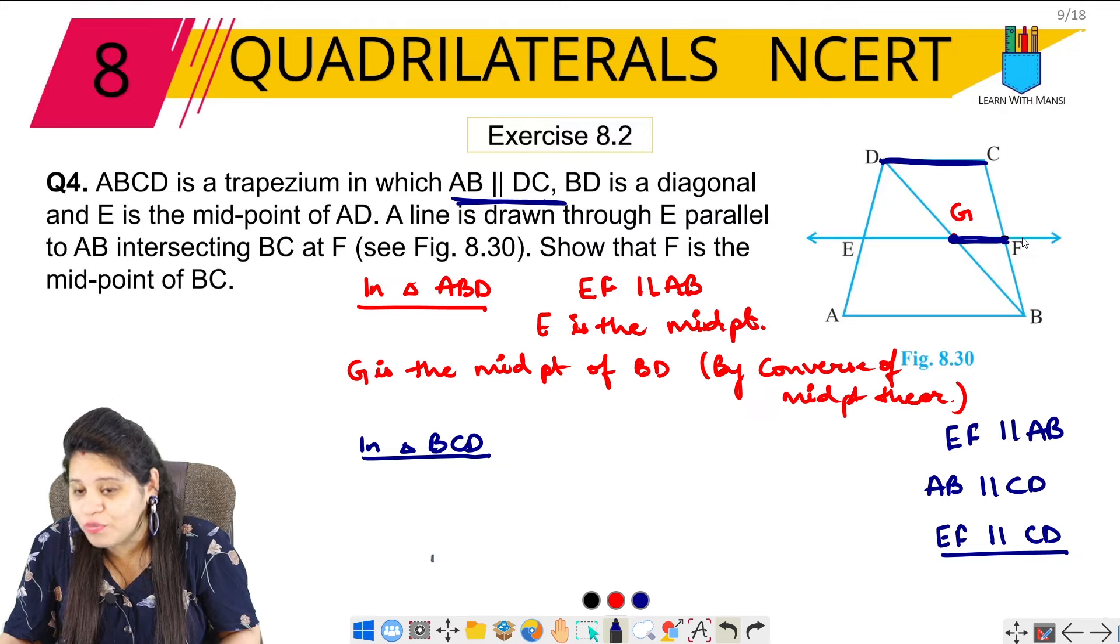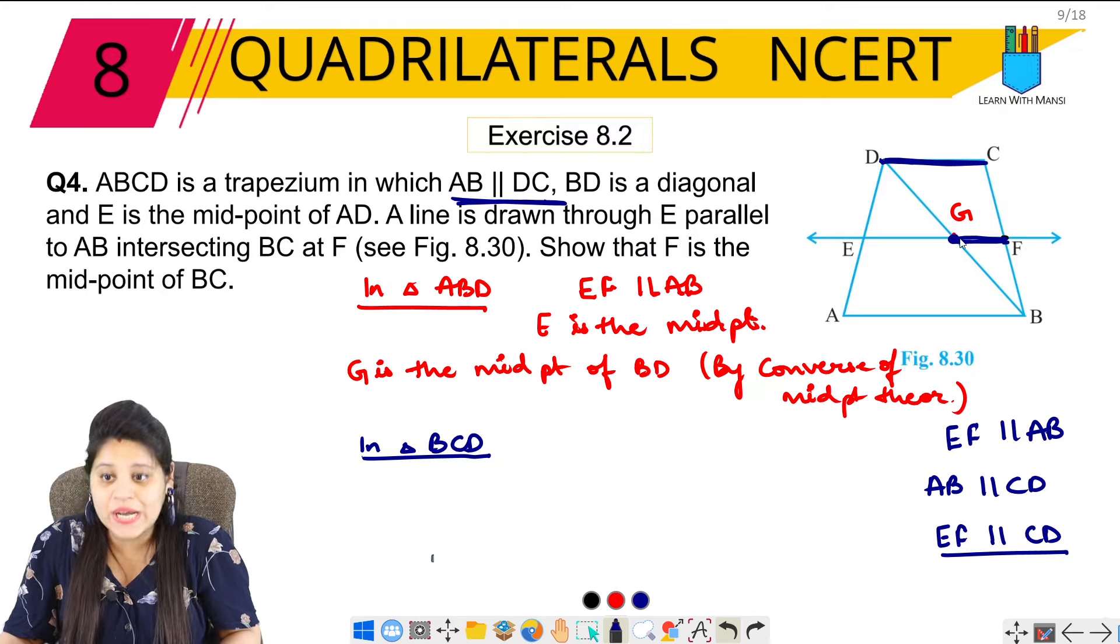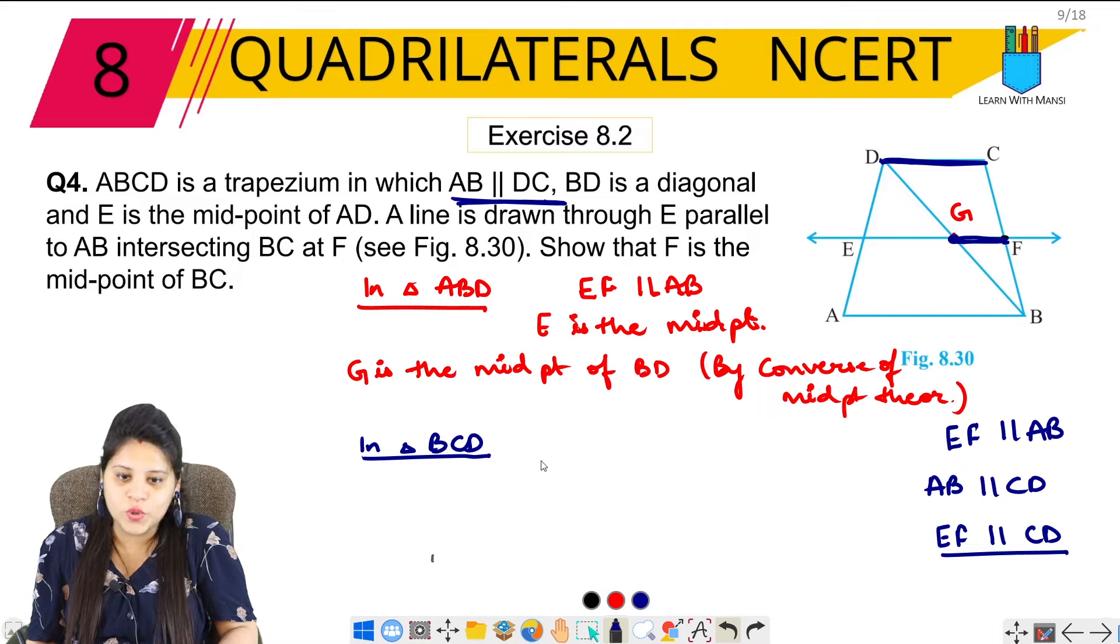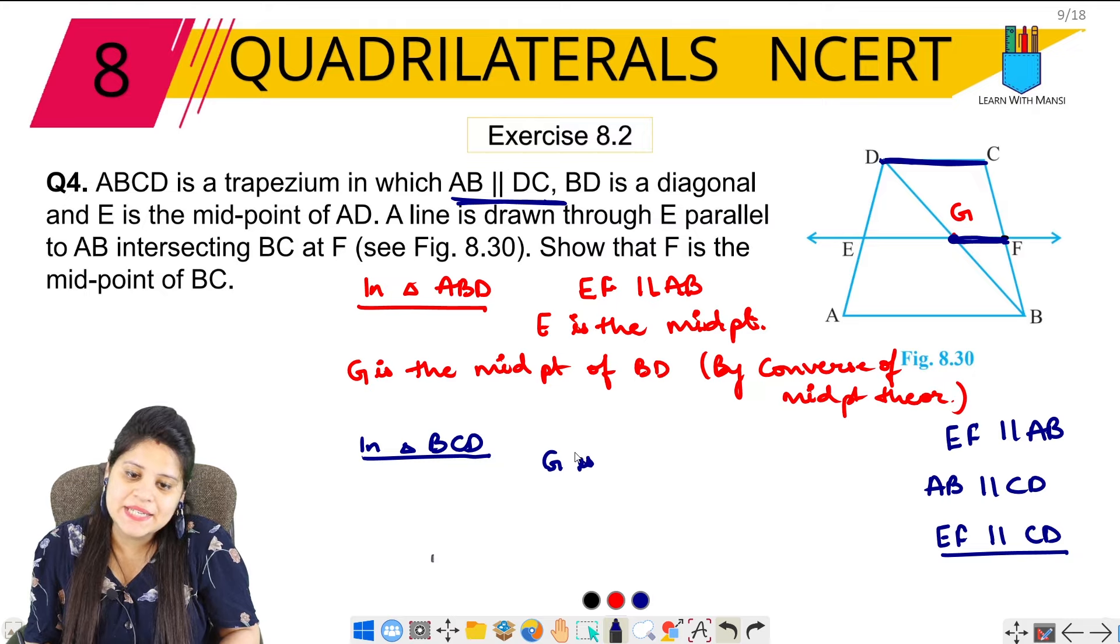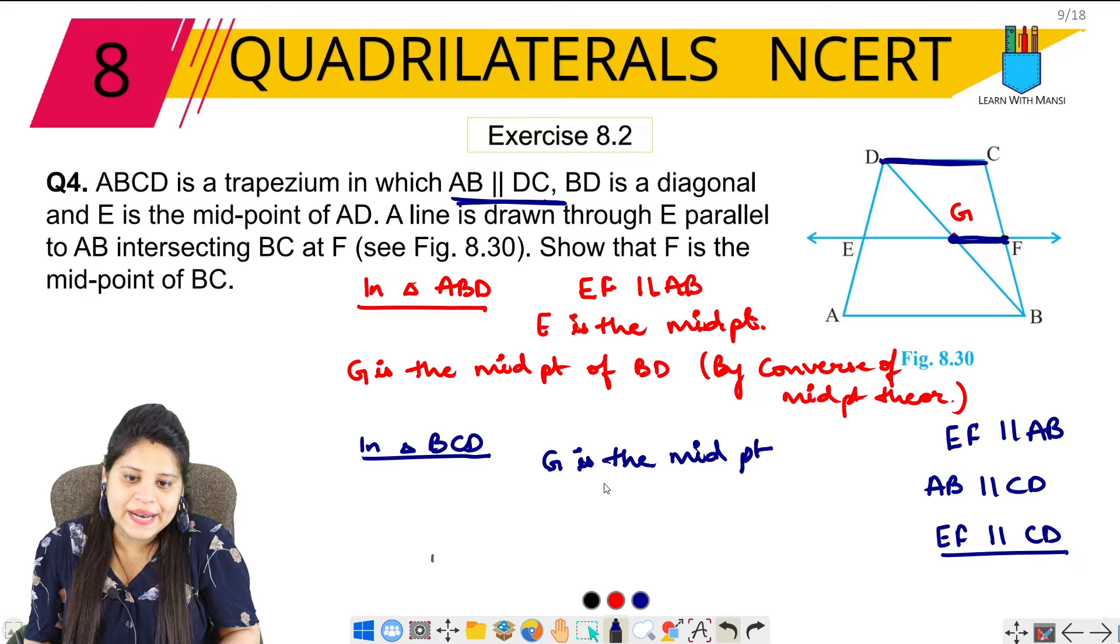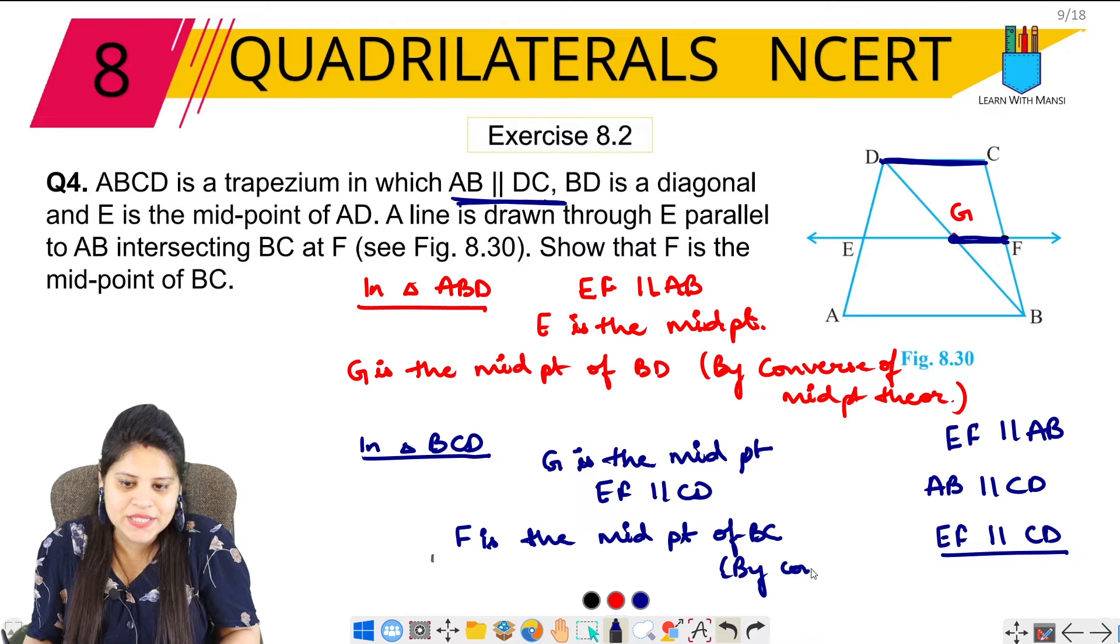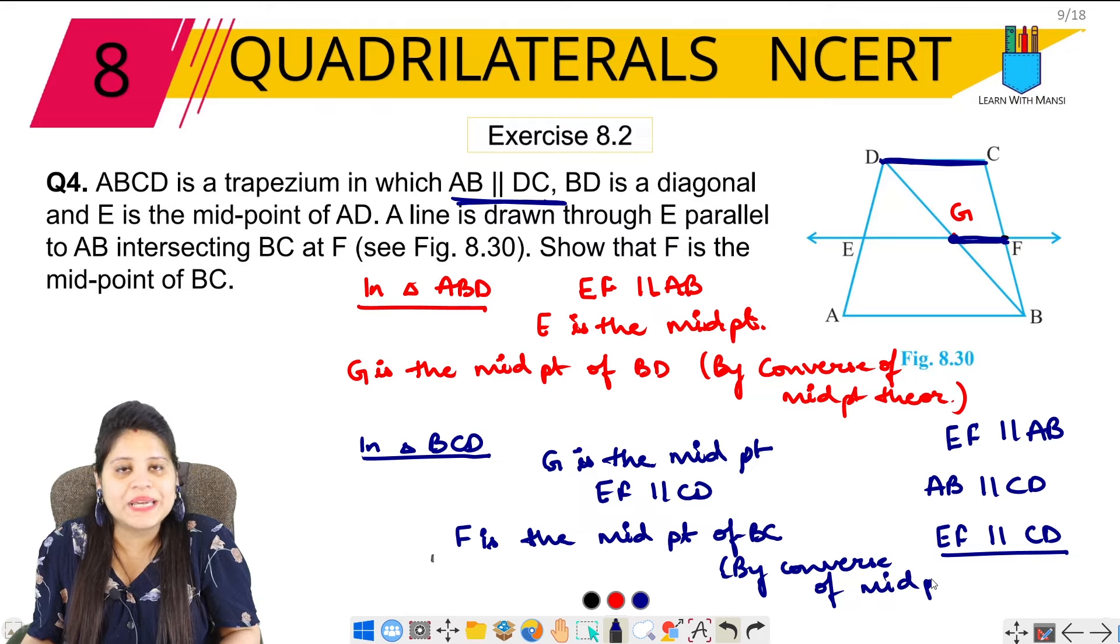So by converse of midpoint theorem, F is midpoint, G is midpoint, and this is parallel. So here I will mention G is the midpoint and also EF is parallel to CD. So F is the midpoint of BC. By converse of midpoint theorem we can say that F is the midpoint.